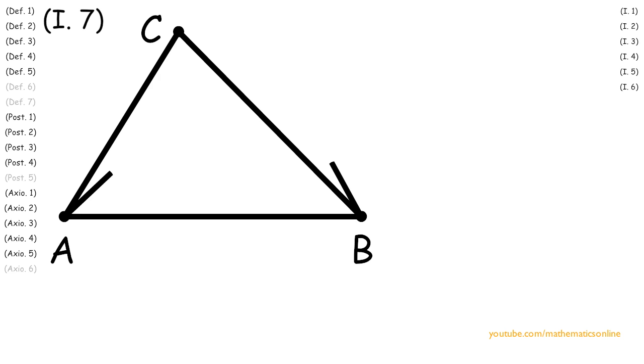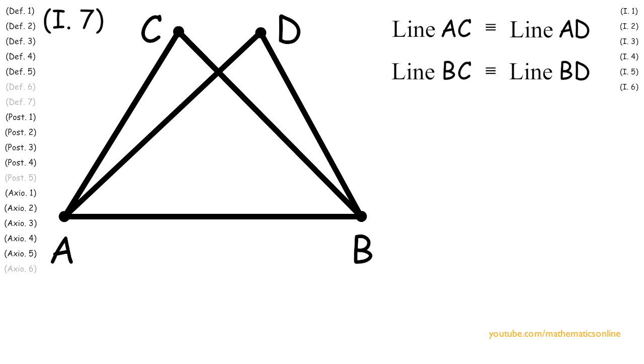So we have two lines drawn meeting at point D instead, and line AC is congruent to line AD, and line BC is congruent to line BD.